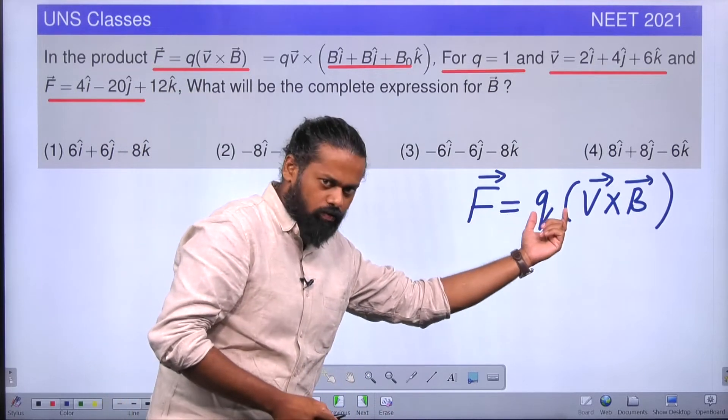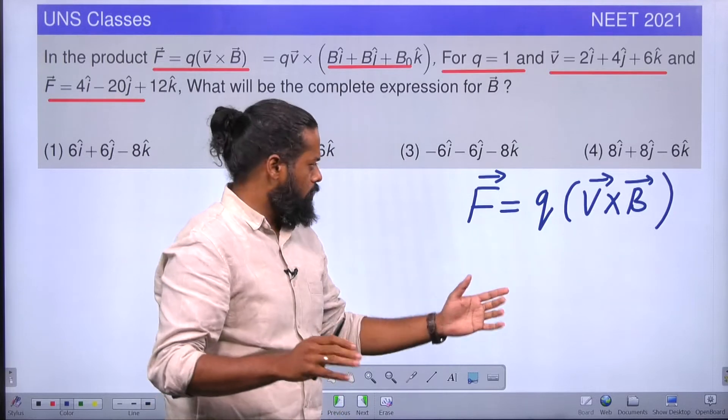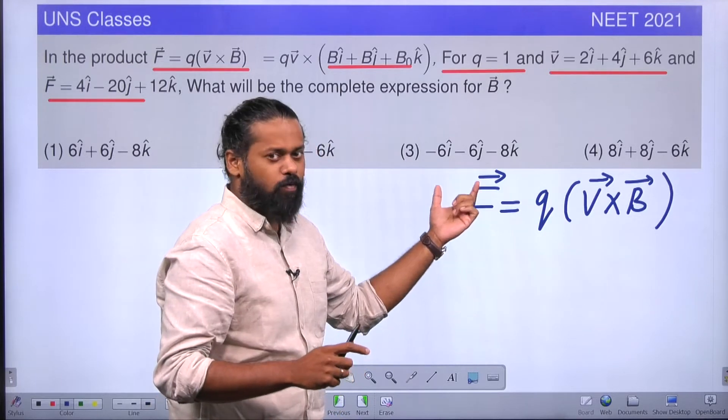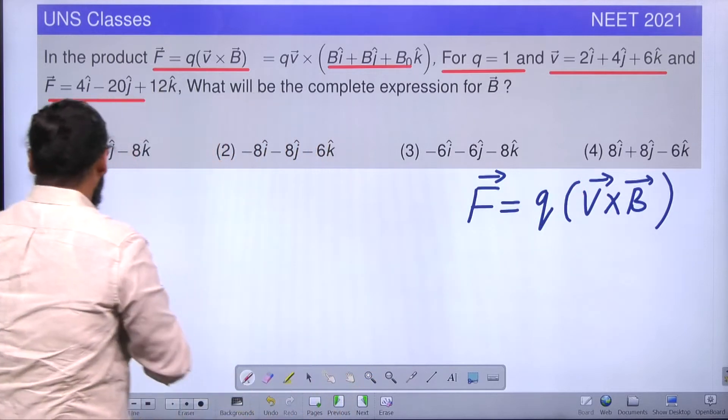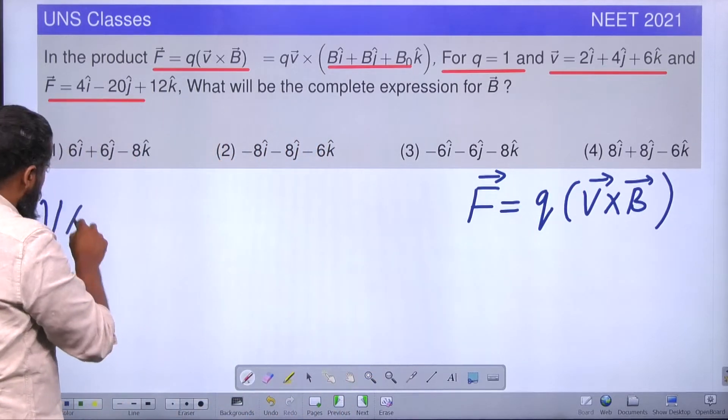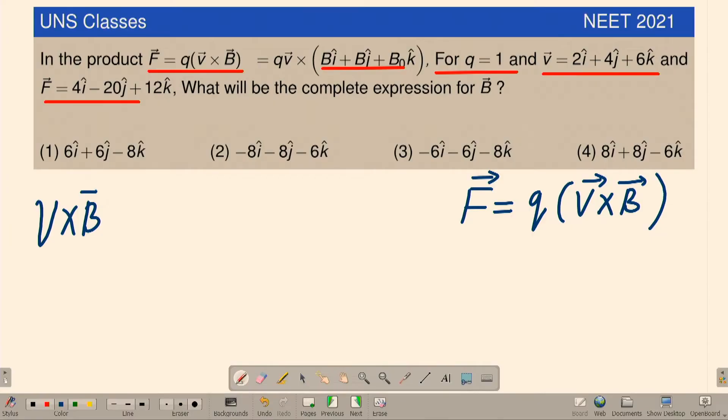First of all, you know that q is 1, even if you are not writing it, it is not going to be a problem. So left-hand side force is given, v cross B we can find out. I hope all of you are thorough with this. v cross B is nothing but the determinant of...